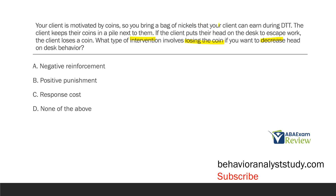We know the client is motivated by coins. The client keeps those coins in a pile, and if they engage in the behavior to escape work, you take the coin away — removing the coin with the intent to punish. Answer A, negative reinforcement: it would be negative, but it's not reinforcement since reinforcement involves increasing behavior. Answer B has punishment but also positive — it's not a positive procedure because positive means adding something; here we're taking it away. What we're doing is C, response cost. Response cost is a negative punishment procedure: you're taking away a reinforcer contingent on behavior in order to decrease that behavior. So the answer is C, response cost.